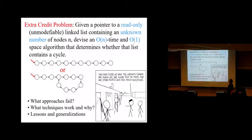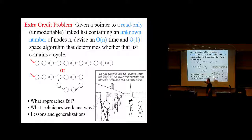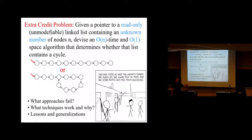We mentioned a problem for extra credit. If you have a pointer to a read-only list that's very long but you don't know how long, you're trying to figure out if it's a nice long list with an end point, or if it's a circular list that doubles back on itself and creates a cycle. You have to come up with an algorithm to determine which is which, doing so in time proportional to the number of nodes in the list, and with only a constant amount of extra space.